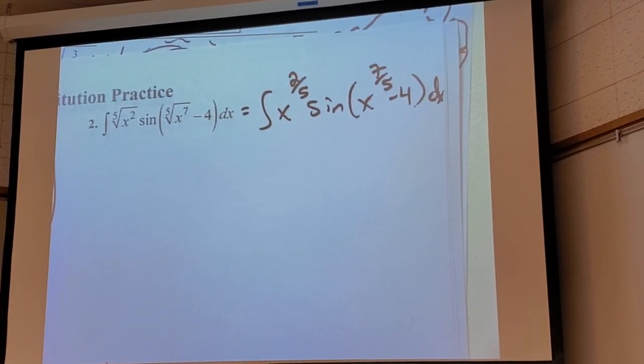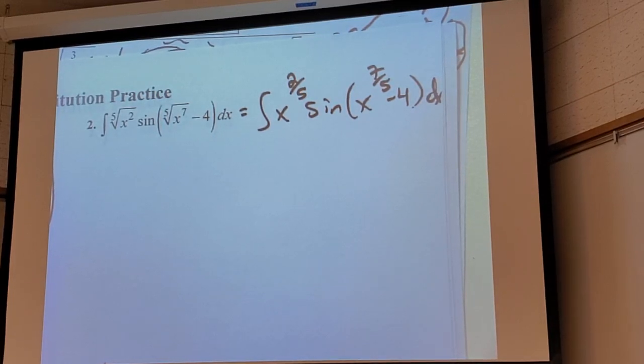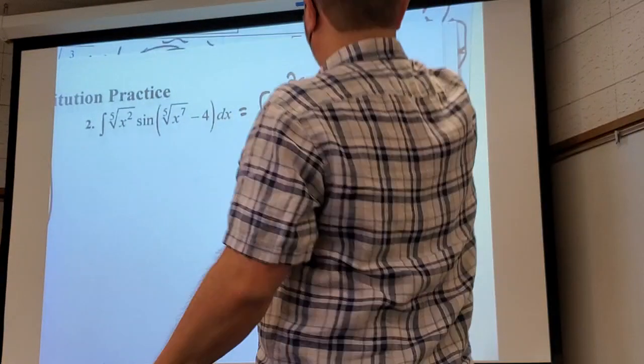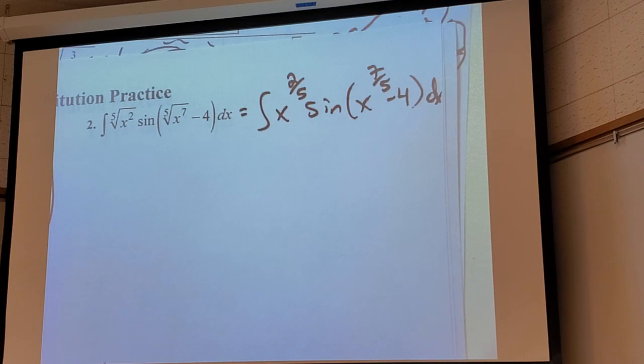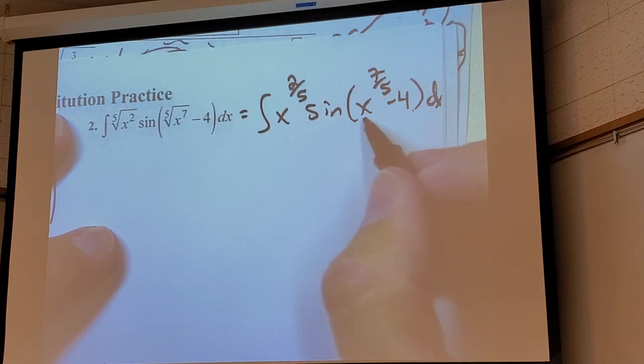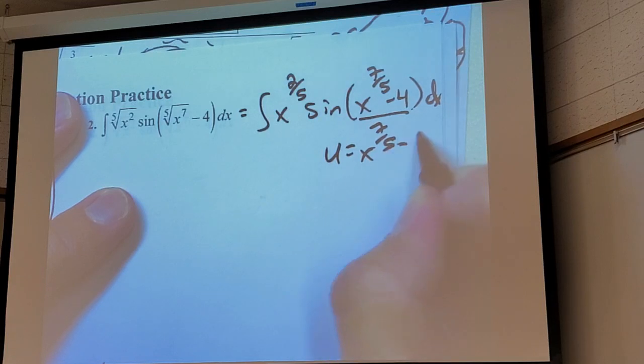Now guys, on this problem here, this is another what I would call a classic u-sub problem. What would you make u equal to? x to the 7/5 minus 4. Good. Because if I have sine of a single thing, that's easy. I can do it. You could think maybe make u equal x to the 7/5, this derivative is in there, but then you would still have a minus 4 tacked onto that. That would kind of suck a little bit.